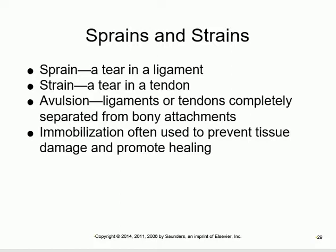In a sprain, only part of the fibers are torn and it can heal on its own. In avulsion, the ligament is completely cut and surgery may be needed. In all these cases - sprain, strain, avulsion, dislocation - the most important treatment principle is immobilization. Do not move it; use a cast or wrap until it heals.